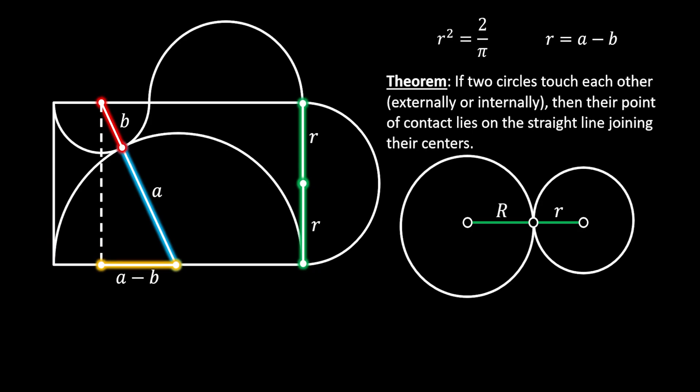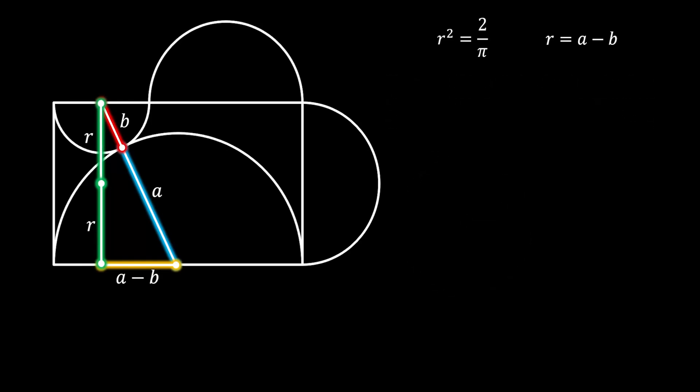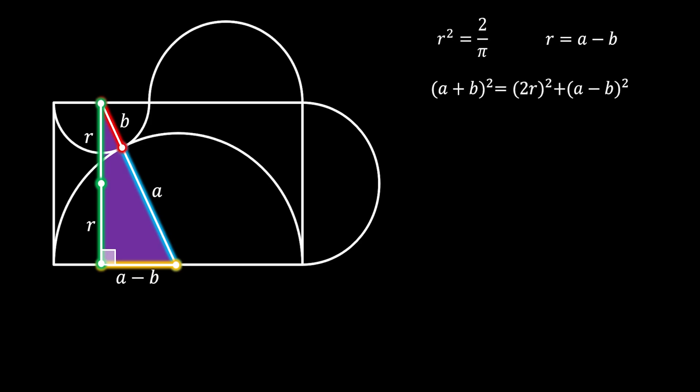Furthermore, we can slide the height of our rectangle, located on the right side, to this line, and we will get a really nice right-angled triangle. Now, we can use the Pythagorean theorem for this triangle. We can say that the hypotenuse (A + B) squared must equal the vertical leg (2r) squared plus the horizontal leg (A − B) squared. We can expand this using the square of binomial formula. Here, we can simplify by canceling A squared and B squared on both sides of the equation, and if we rewrite this, we will get that 4AB equals 4r squared.